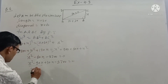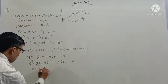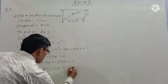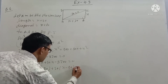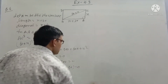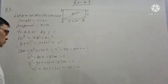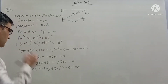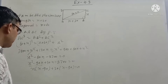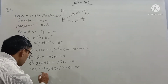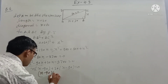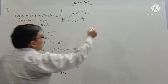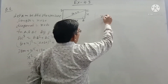Taking x common: x(x minus 90) plus 30(x minus 90) equals zero. So the factors are (x minus 90) and (x plus 30). Therefore x equals 90 or x equals minus 30.